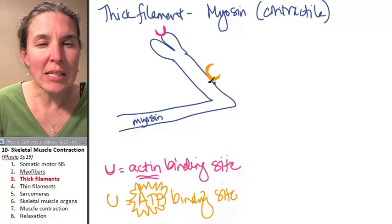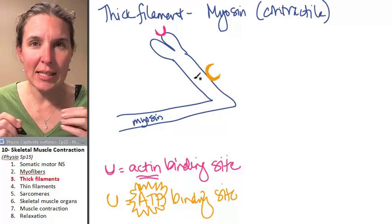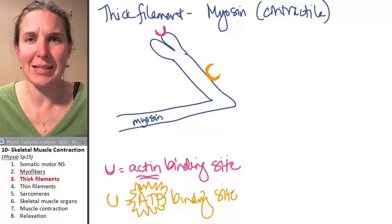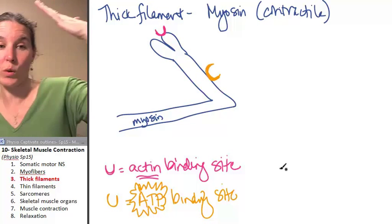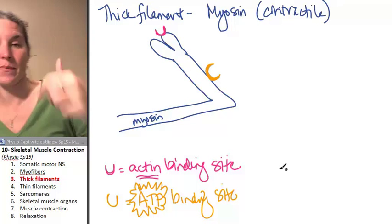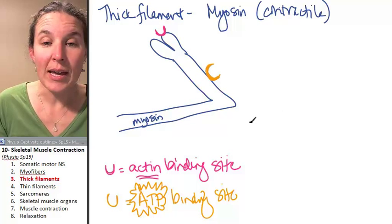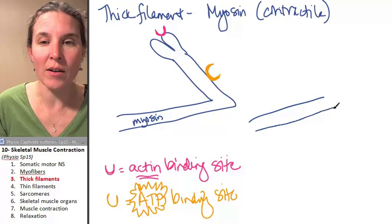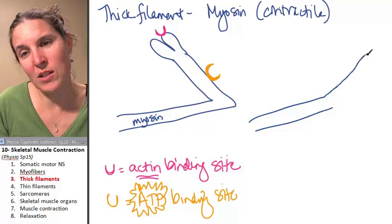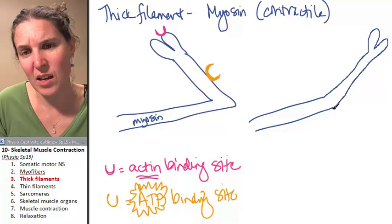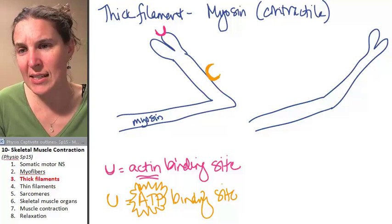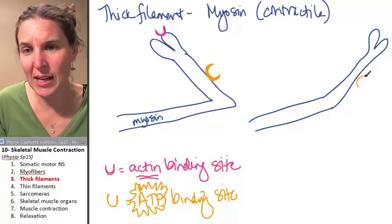But myosin can exist in two states, two forms. It can be folded like that, or it can be, and this is where the only word that I can think of to describe this is that it's cocked. And look, it still has its two binding sites.